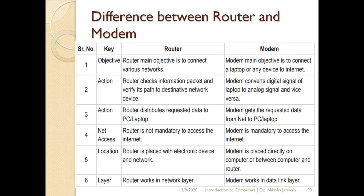The third difference is also related to action. The router distributes requested data to the computer or the network. But the modem gets the requested data from the internet and delivers it to other devices. So the modem is used because we can connect with the internet through it.